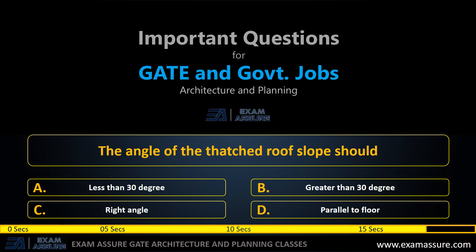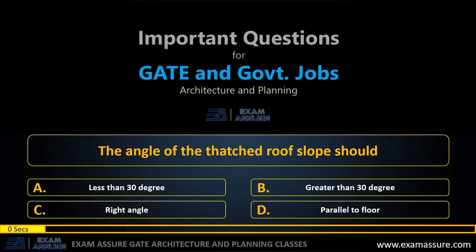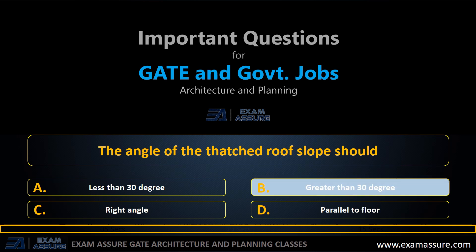Next question: the angle of the thatch roof slope should be — option A: less than 30 degrees, option B: greater than 30 degrees, option C: right angle, option D: parallel to floor. The correct answer is option B: greater than 30 degrees.